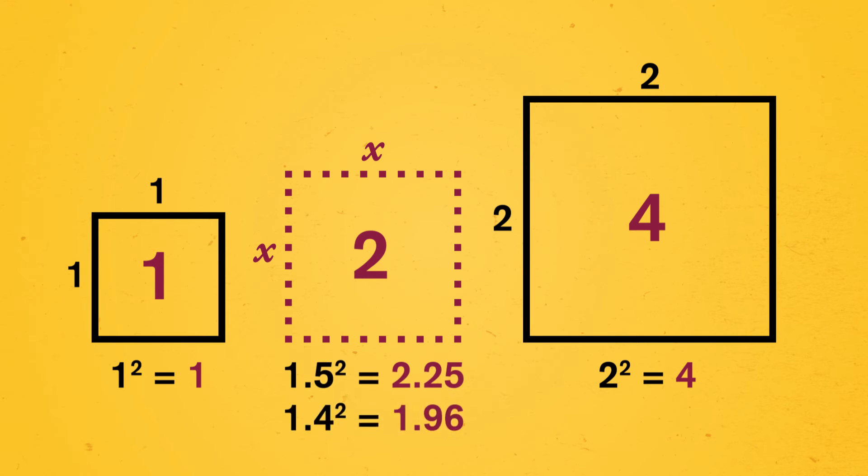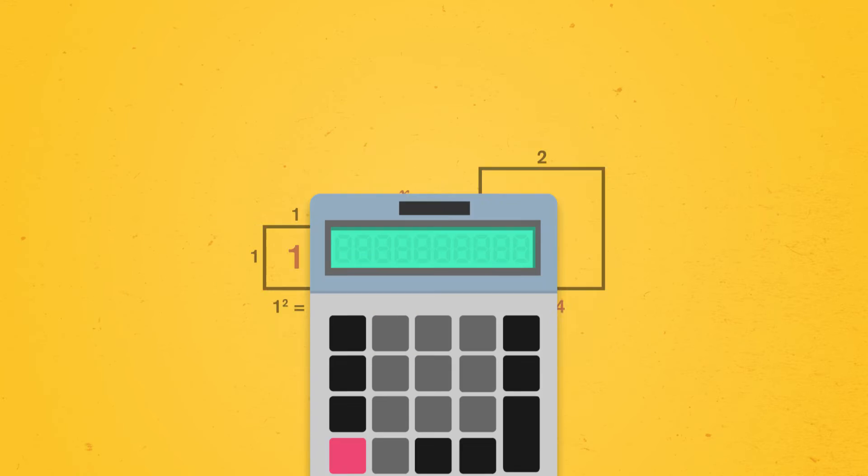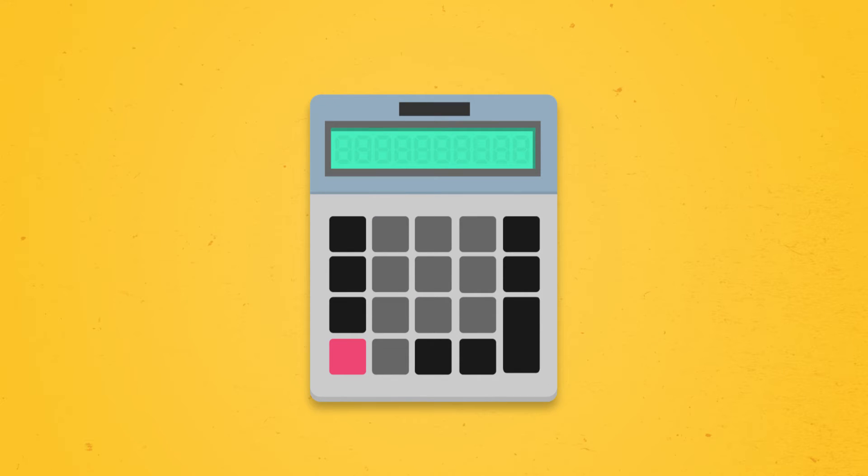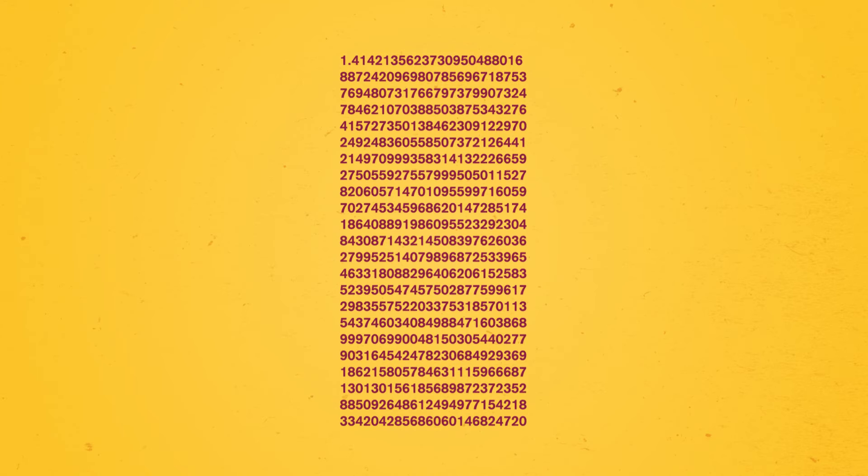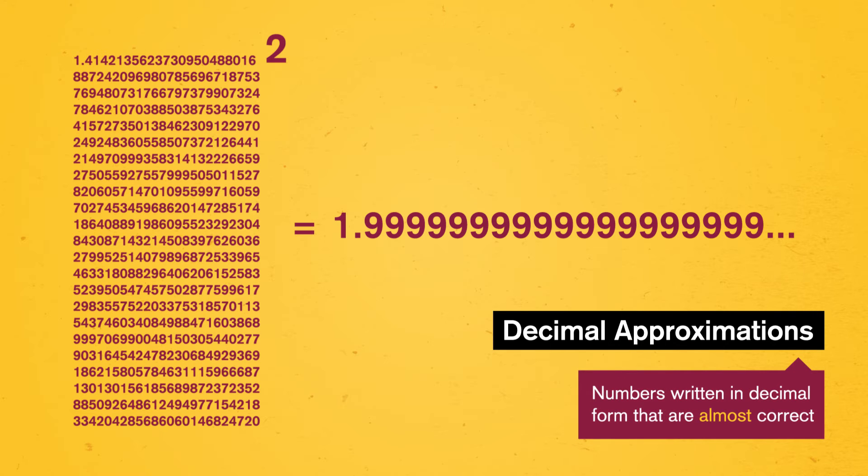But where? 1.5 is too big. 1.4 is too small. Type the square root of 2 into a calculator, and it shows something like 1.414213562, but even that's not quite right. Here's an even closer approximation to the square root of 2. Square that, and we still don't get exactly 2. Although sometimes decimal approximations, numbers written in decimal form that are almost correct, are good enough for practical purposes. For example, if we're building a square bookcase and use 1.414 meters as our side length, we'll only be a tiny bit off from the area being 2 square meters. No one will be able to tell.